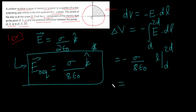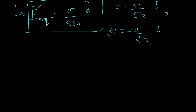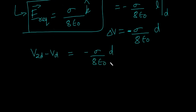So delta V equals sigma by 8 epsilon naught, and after integration you get a factor of d. Note that this delta V arises because we used upper limit 2d. But if you are asked for V_d minus V_{2d}, the order matters — whichever point is given first in the question should come first. So depending on the question's statement, the sign of the answer changes accordingly.